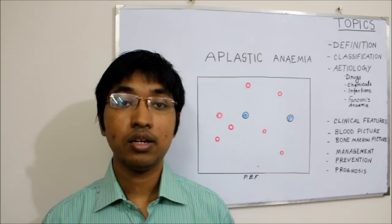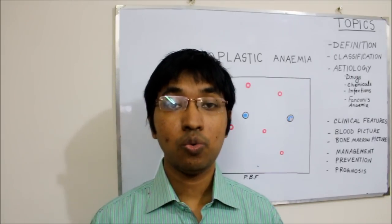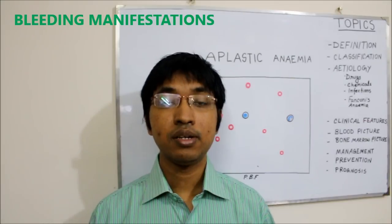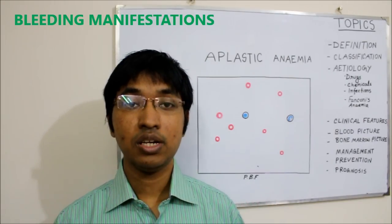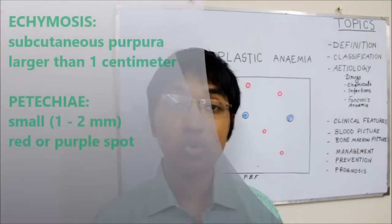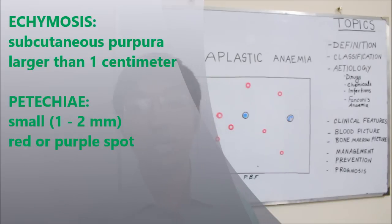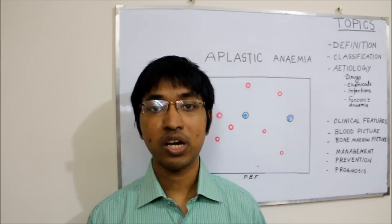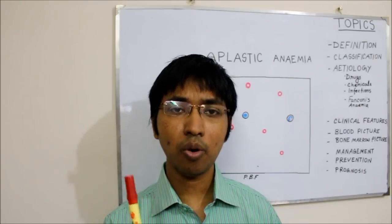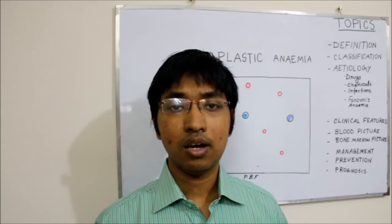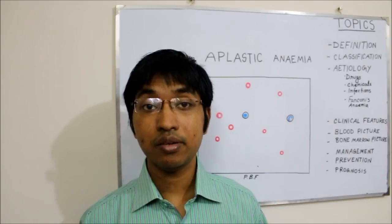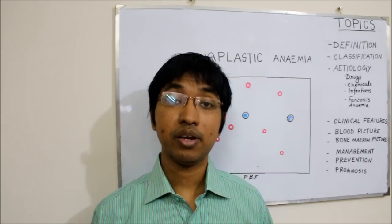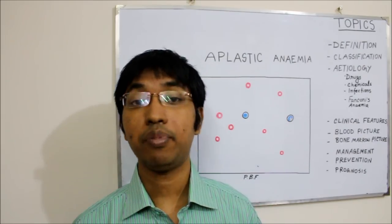What are the clinical features due to thrombocytopenia? Since there is a reduced amount of platelets, there will be bleeding manifestations. There will be bleeding in the skin in the form of ecchymosis or petechiae, gum bleeding, bleeding from the nose (epistaxis), and there may also be bleeding from other sites such as the GI tract. Sometimes there may even be cerebral hemorrhage, and that is not good — the patient may die from cerebral hemorrhage resulting from thrombocytopenia in aplastic anemia.